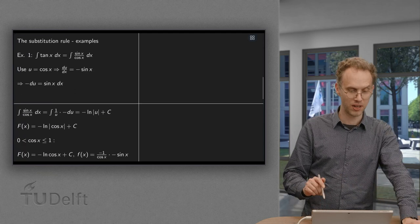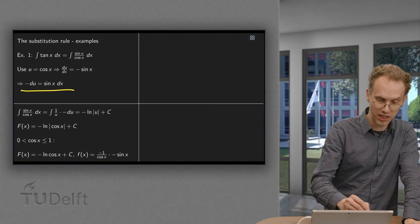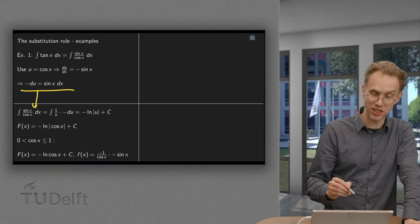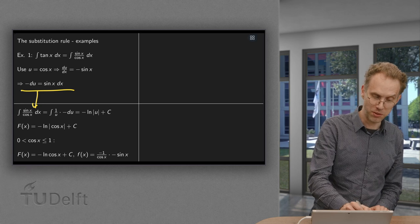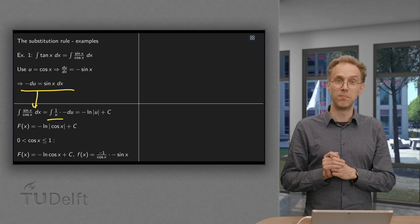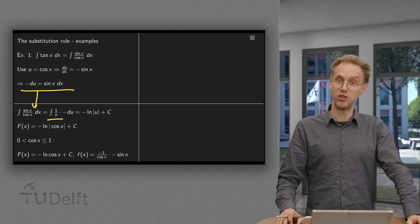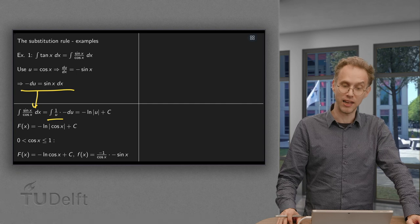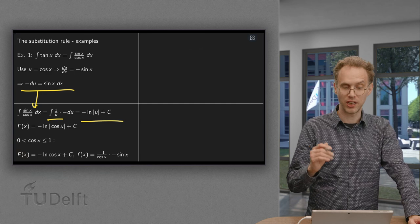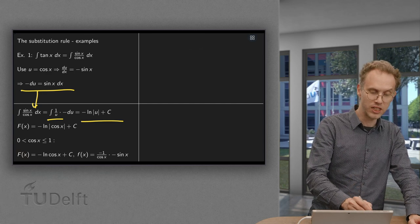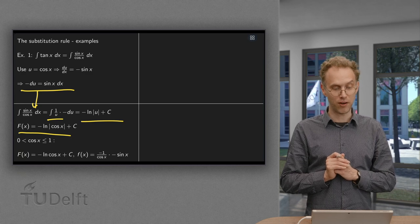So what do we get? The sine x dx is replaced by minus du. The 1 over cos x becomes 1 over u, and we have to integrate minus 1 over u du. That is an antiderivative we do know. It is just the ln of u, absolute value. So we get minus ln of u plus an integration constant.